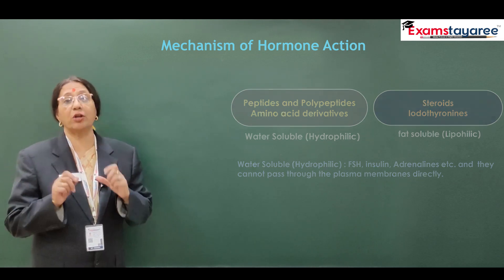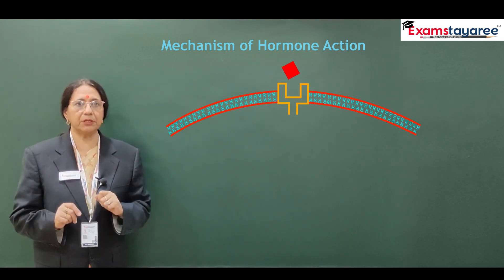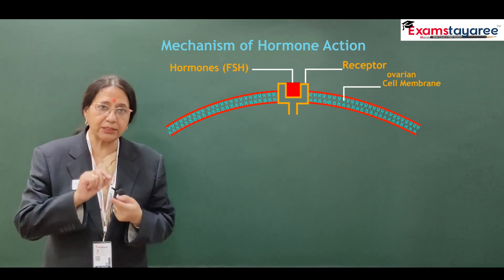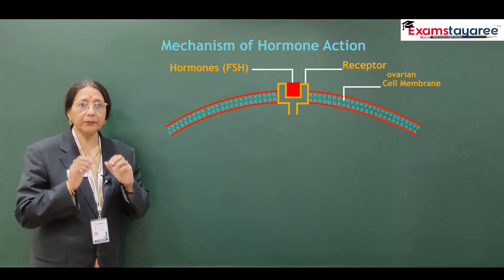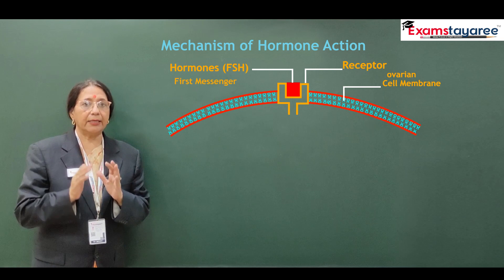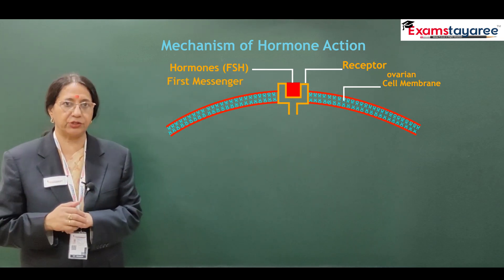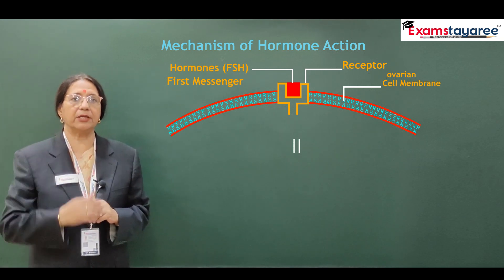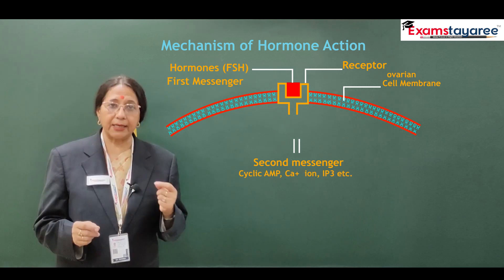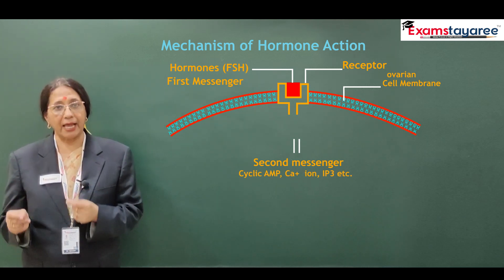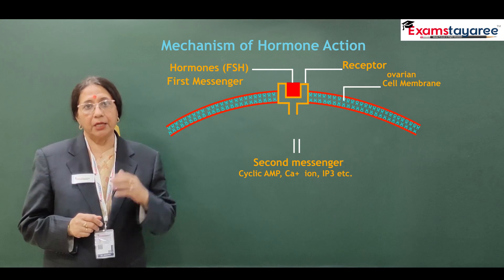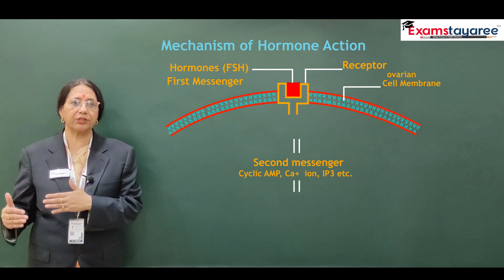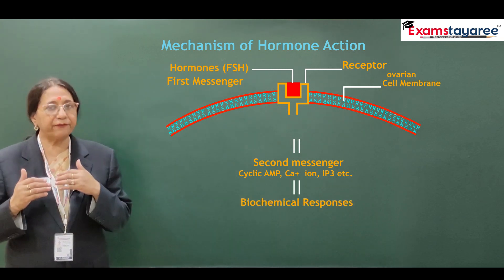So there are receptors on plasma membranes — fixed receptors, which are proteins — and the hormones first come and attach themselves to these receptors. Once this receptor complex is formed, it is known as the first messenger. It enters the cytoplasm and forms another messenger called the second messenger, which may be cyclic AMP, IP3, or calcium ion, etc. Once this second messenger is formed, it creates biochemical reactions — a chain of reactions — and finally, the physiological change can be seen in the cell.